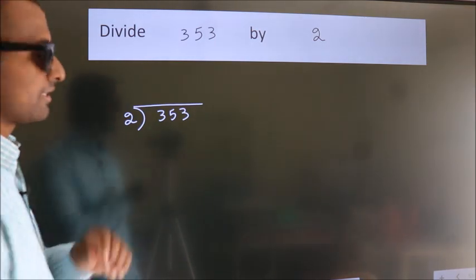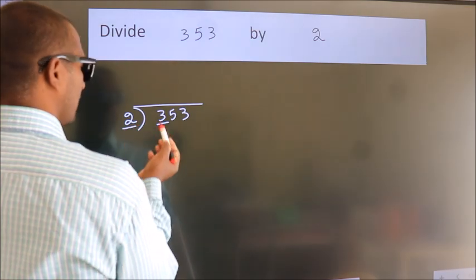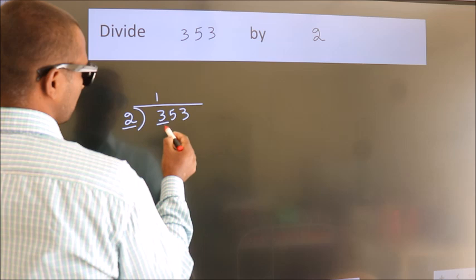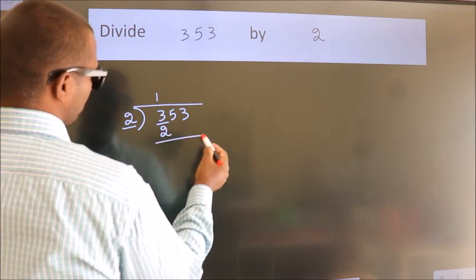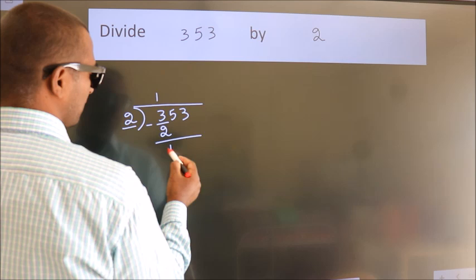Next, here we have 3, here 2. A number close to 3 in the 2 table is 2 once 2. Now we subtract and get 1.